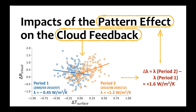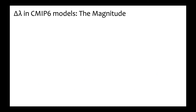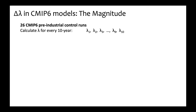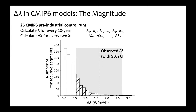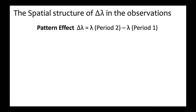Subtracting the cloud feedback in period one from period two gives Delta Lambda of plus 1.6 W/m²/K. We believe this difference is because the surface temperature warming pattern in period one and period two are different, which is known as the pattern effect. We will focus on Delta Lambda to quantify the impact of the pattern effect. We analyze 26 CMIP6 models from CMIP6 control runs, dividing each model into 10-year segments to calculate 10-year cloud feedbacks and taking differences to calculate Delta Lambda.